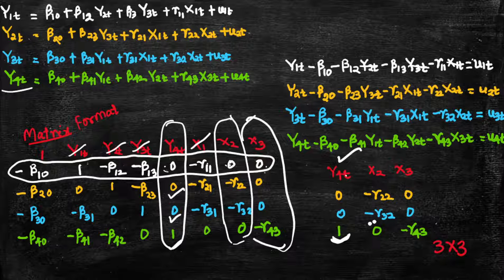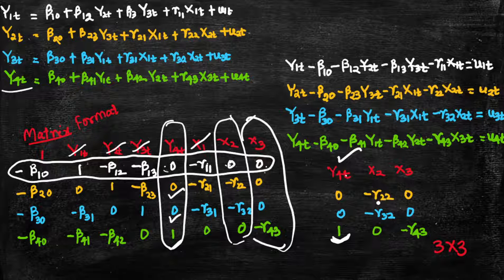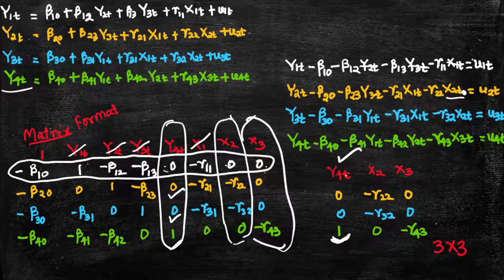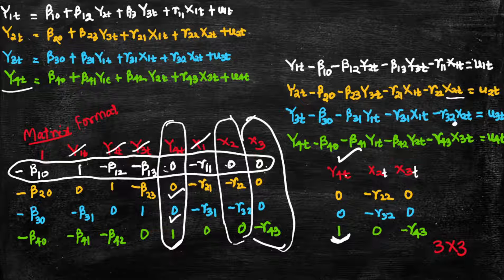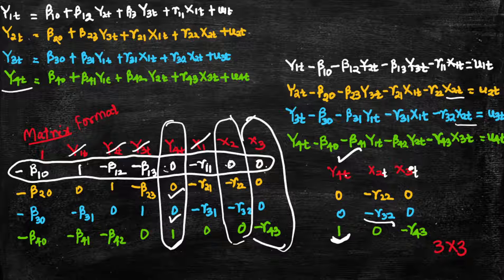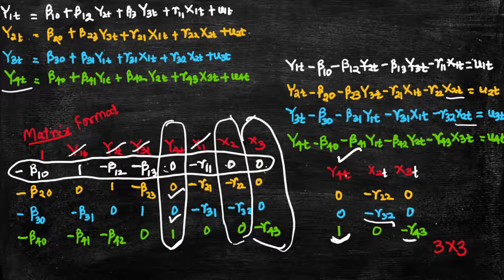x2t is present in equation two, so we write its coefficient negative gamma 22. In equation three, x2t is also present so we write the respective coefficient negative gamma 32. For x3t, it is not present in equations two or three but it is present in equation four, giving us its corresponding coefficient.